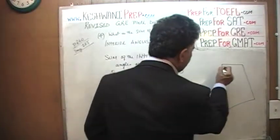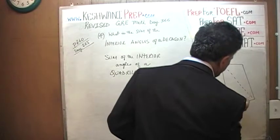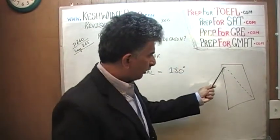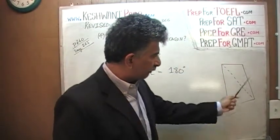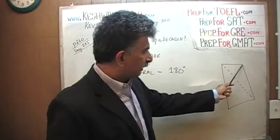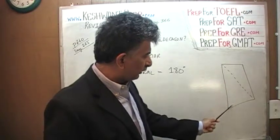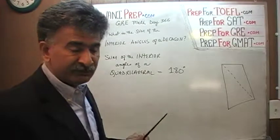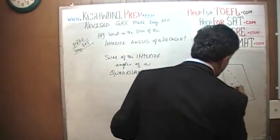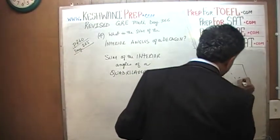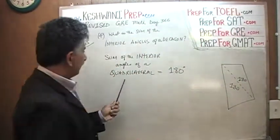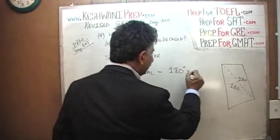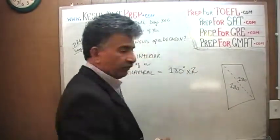We could cut the quadrilateral along one diagonal or the other diagonal — it is made up of two triangles either way. And since we know the sum of the degree measure of one triangle is 180, the sum of the interior angles of the quadrilateral is just 2 times 180.